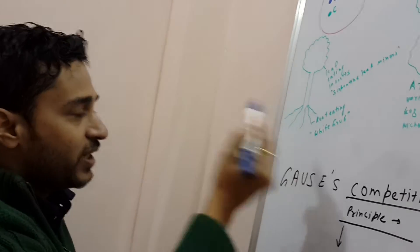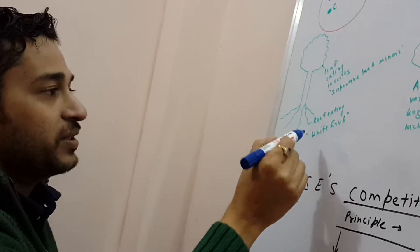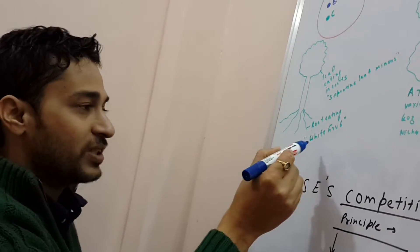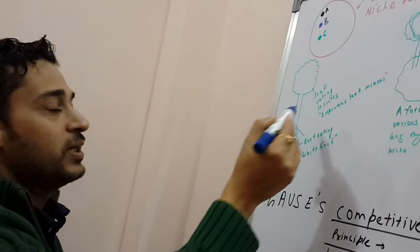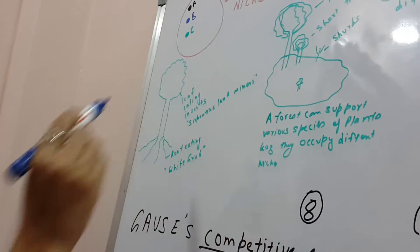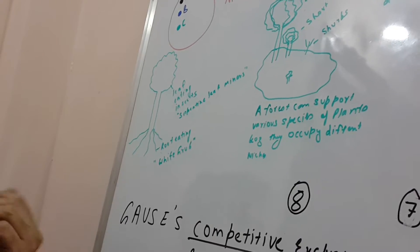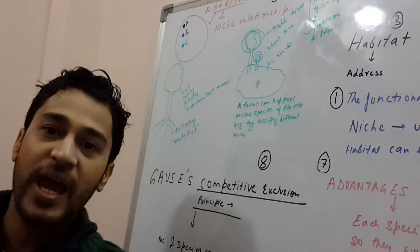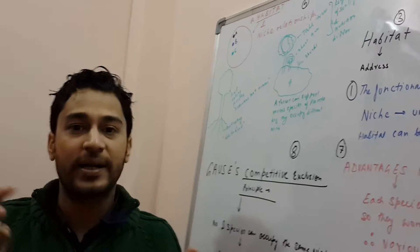Now if we take an example, let's say there is a tree and there are some insects that eat the roots. For example, white grub eats the roots. There are some insects which eat the leaves. For example, the serpentine leaf miners eat the leaves. So they have different roles even though the habitat is the same.